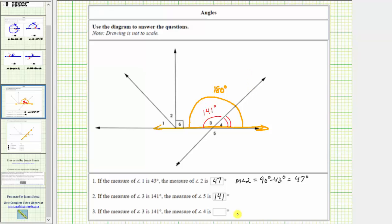Let's go ahead and write that out. The measure of angle 4 equals 180 degrees minus 141 degrees, which equals 39 degrees. We enter 39. I hope you found this helpful.